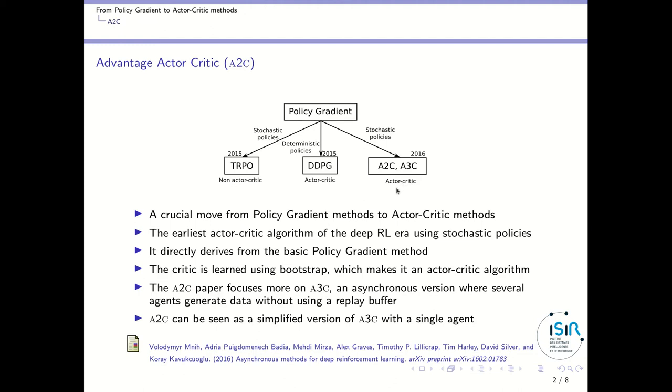More precisely, it directly derives from the policy gradient method, but the critic is learned using bootstrapping, which makes it an actor-critic algorithm. The paper where A2C is defined focuses more on an asynchronous version called A3C, where several agents generate data. Since this is asynchronous, the corresponding data is more independently and identically distributed, so you don't need a replay buffer in A3C. A2C can be seen as a simplified version of A3C with a single agent, but it still does not use a replay buffer.